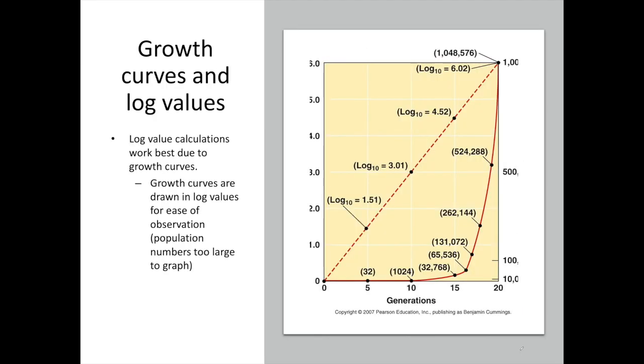This brings us to growth curves. Because bacteria grow exponentially, when we graph this growth by the actual number of cells in a generation, the growth curve is kind of wonky. It doesn't really start to show much until we get to around the 15th generation. Because of this exponential growth, it makes it difficult for us to determine a rate of growth. The rate over here is going to be much different than the rate over here, and that is due to exponential growth.